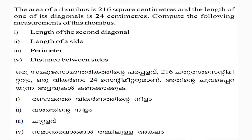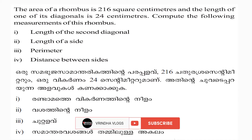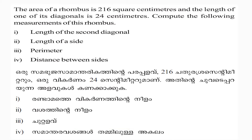Next question. The area of a rhombus is 216 square centimeters, and the length of one of its diagonals is 24 centimeters. Compute the following measurements of this rhombus: length of the second diagonal, length of the side, perimeter, and distance between the sides.